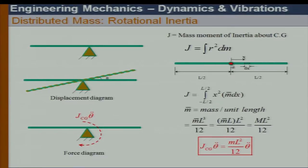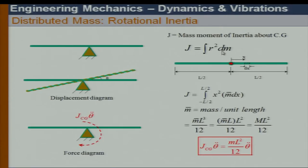For a bar with distributed mass m̄ (mass per unit length), dm equals m̄ times dx. Integrating from -L/2 to +L/2 gives J. So J equals M·L²/12, where M is the total mass.